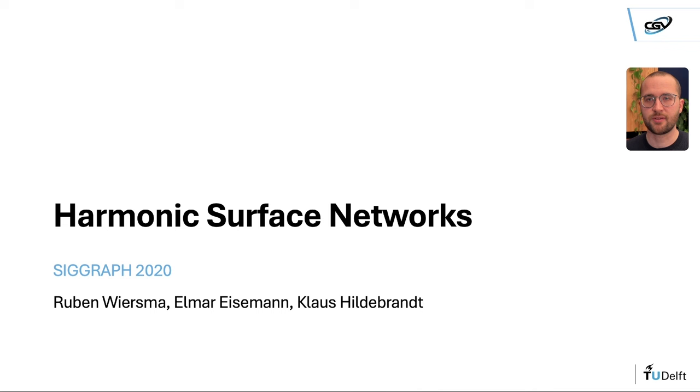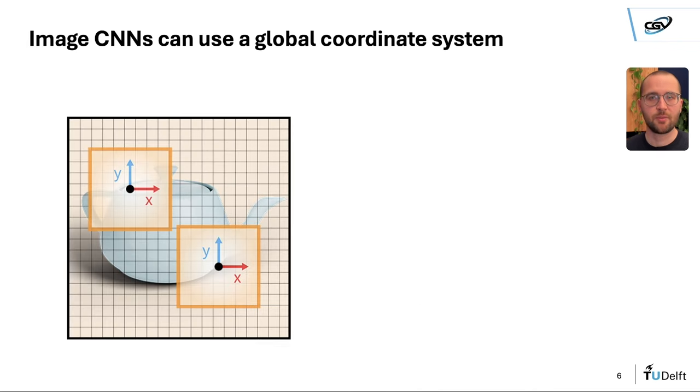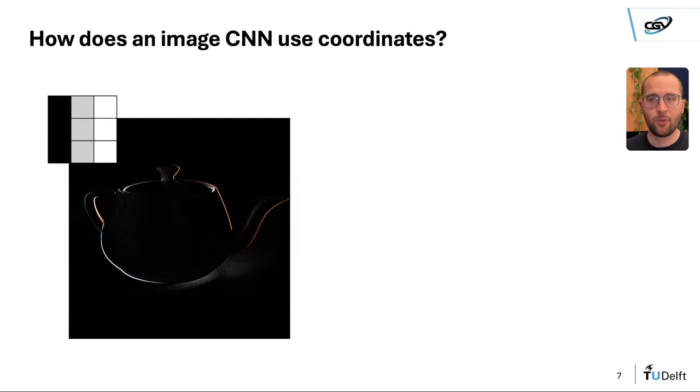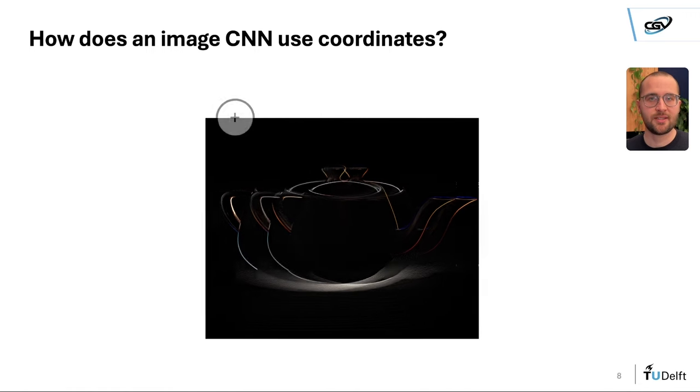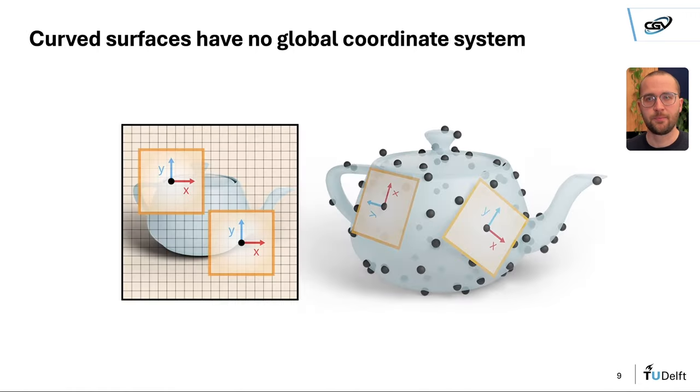First, CNNs on curved surfaces with harmonic surface networks. On images, we can apply convolutions that encode directions because the pixel grid gives us a global coordinate system. We can find vertical and horizontal edges and combine these in the layers of a neural network. On surfaces, we don't have such a global coordinate system, so how can we still encode and learn from directional information?